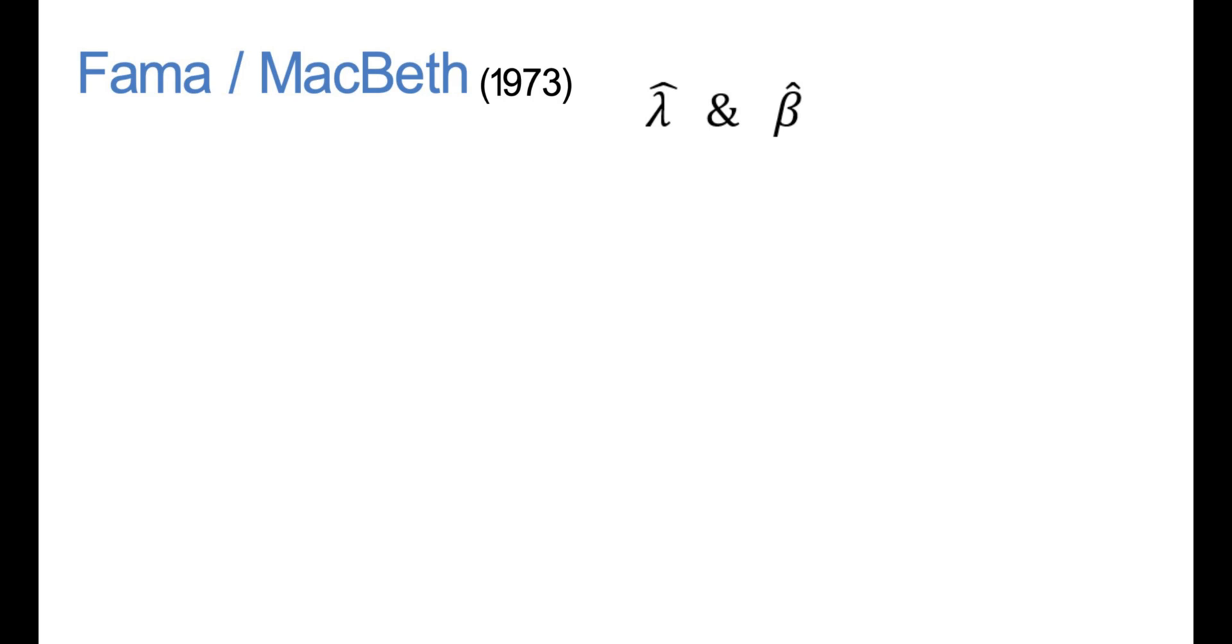Basically the key equation is the following: the expected risk premium for asset i equals lambda times beta i.